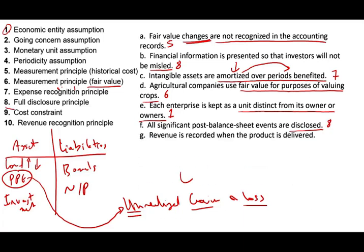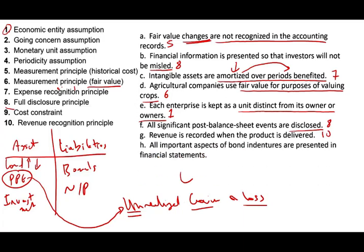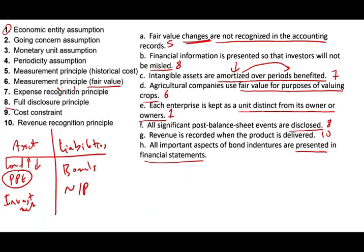Revenue is recorded when the product is delivered. We deliver the product, we perform our service, and we recognize revenue. That principle is called the revenue recognition principle. Next: all important aspects of a bond indenture are presented in the financial statements. Under what principle do we present everything we need to present about the bond or anything else? That would be the full disclosure principle — you are presenting everything.